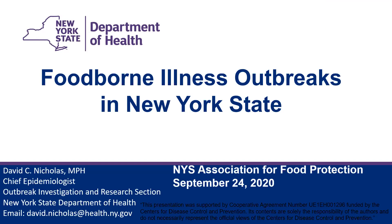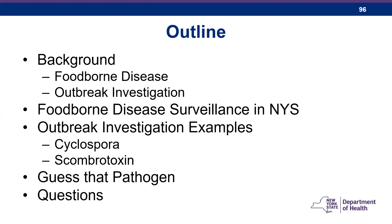What I'm going to talk to you about today is foodborne illness outbreaks in New York State. The data that we have is going to be limited. Some of you may have seen some of this data because we're all dealing with COVID, and we weren't able to update a lot of our numbers. We're going to talk about foodborne diseases, outbreak investigations, and foodborne disease surveillance in New York State. I'm going to go over some outbreak investigation examples — cyclospora and scombrotoxin — and then towards the end, we'll play a little game called Guess That Pathogen.